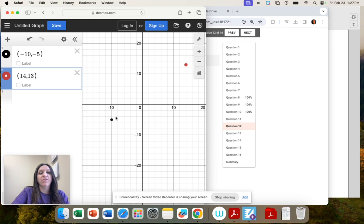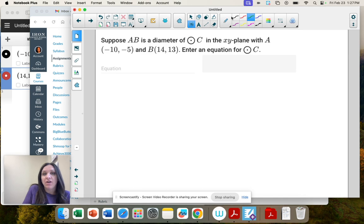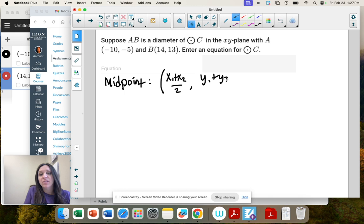The circle is going to go through both of those points, and we need to find the center. So if we want to go in between those points, we call that the midpoint. So this is where we're going to use our midpoint formula, which is an average. We add the x values and divide by 2. We add the y values and then divide by 2.